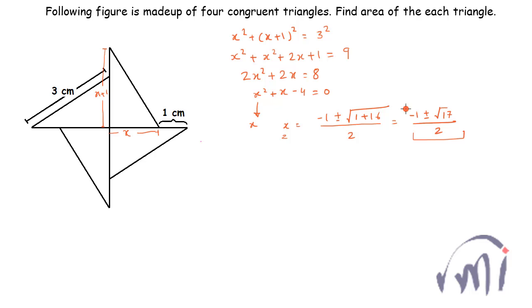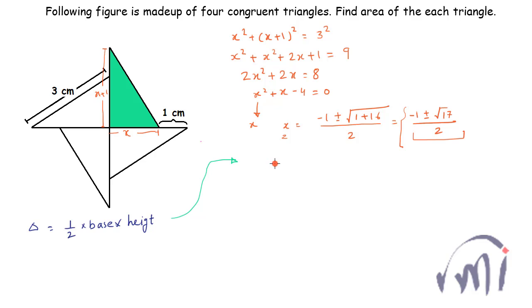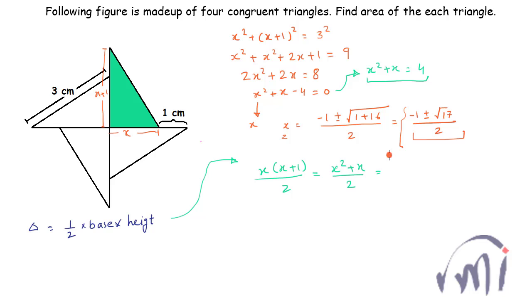The area of the triangle equals half × base × height, so the area = x(x + 1) / 2, which can be written as (x² + x) / 2. From our equation x² + x − 4 = 0, we know x² + x = 4. Substituting that directly, the area = 4 / 2 = 2 centimeters squared.